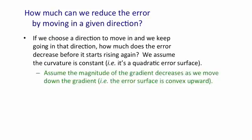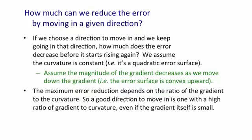We're going to assume that the magnitude of the gradient decreases as we move down the gradient. That amounts to assuming that the error surface is concave upward, like a bowl. The maximum reduction that we can get in the error by going in a particular direction depends on the ratio of the gradient to the curvature. So we want to move in directions that have a good ratio. Even if the gradient is quite small, we want the curvature to be even smaller.